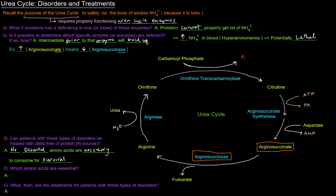Which amino acids are the essential ones? Back in the day, one of my biochemistry classes, I had a TA who came up with this: 'Milk for watching TV,' which is kind of weird, but each underlined letter is the one-letter code for an essential amino acid. So the essential amino acids are M-I-L-K-F-W-H-T-V: methionine, isoleucine, leucine, lysine, phenylalanine, tryptophan, histidine, threonine, and valine. Milk for watching TV — I use this to remember and I haven't forgotten, so it might be good for you too.